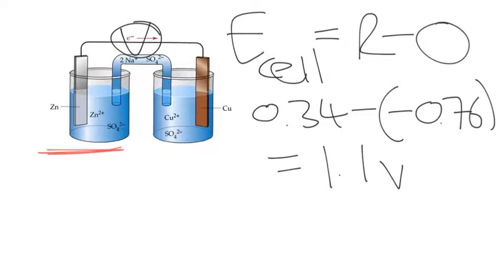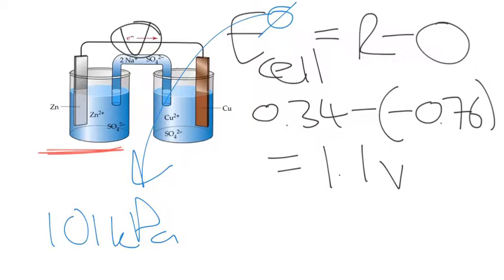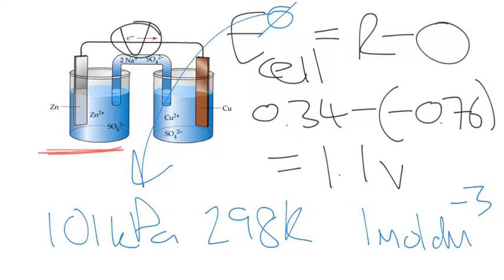The other thing that's really important to mention is currently missing from the top is this little symbol. You don't need to be able to name what it is, but this represents standard conditions, so the whole cell has to be operating under standard conditions. We're looking at 101 or just 100 kilopascals, 298 Kelvin for temperature - you would quote that in Kelvin, not degrees Celsius to be more scientific - and all the solutions must be 1 mole per decimetre cubed, whether it's an acid or one of the ion solutions.